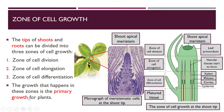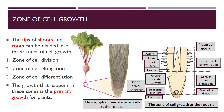The growth that happens in these zones is called primary growth — all growth occurring in these zones is primary growth. Later on there will also be secondary growth. At the lower tip, that is the root apical meristem, and the same three zones apply there as well.